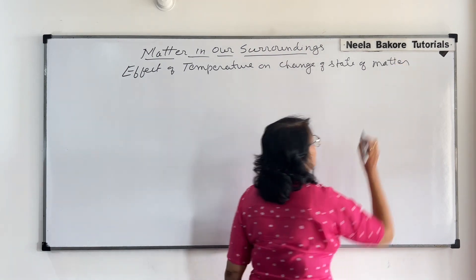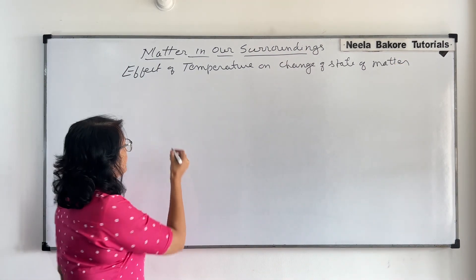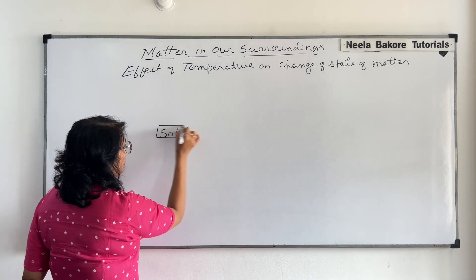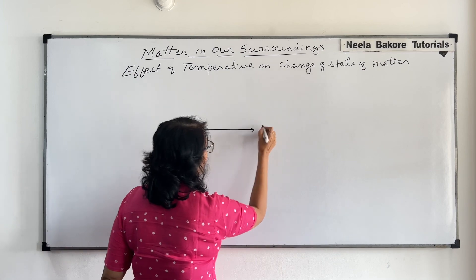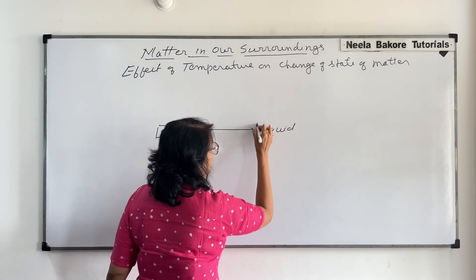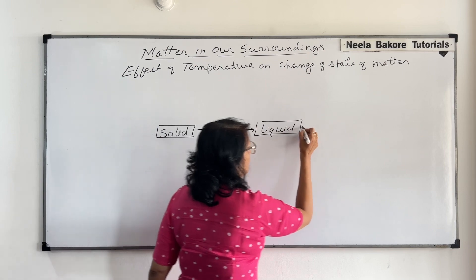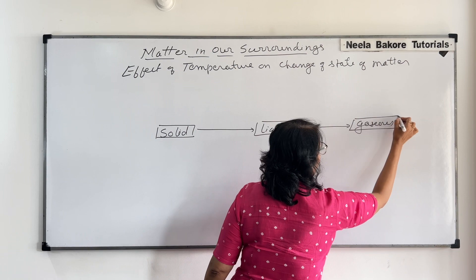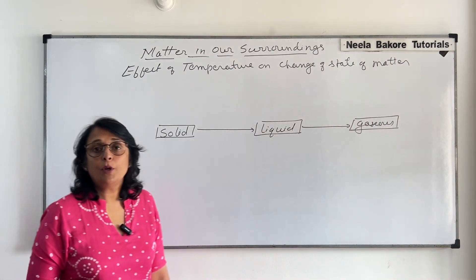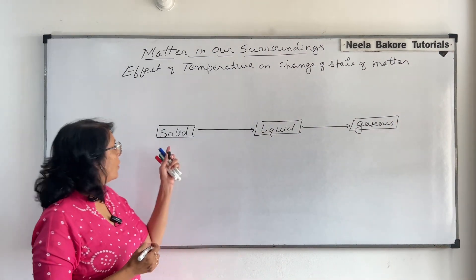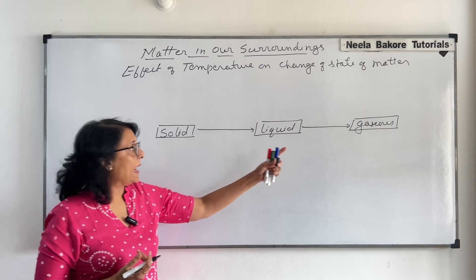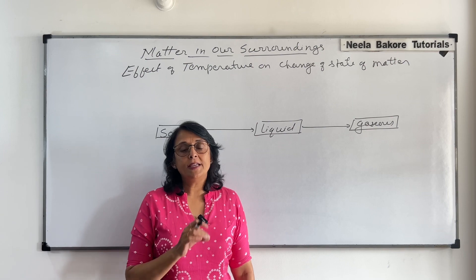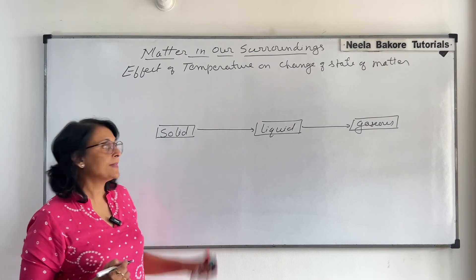We know there are three states of matter: solid, liquid and gases. From solid state it will change to liquid state and from liquid into gaseous. We can take the example of water — solid state is ice, liquid is water, and gaseous is water vapor. Taking the example of ice and water makes it even easier to understand.